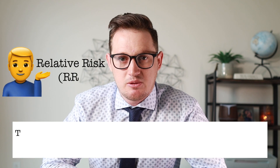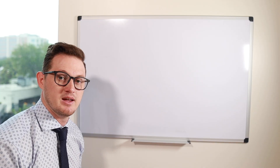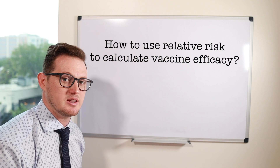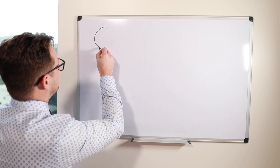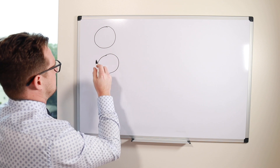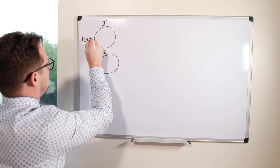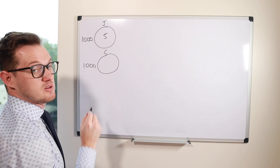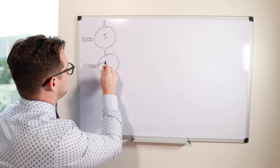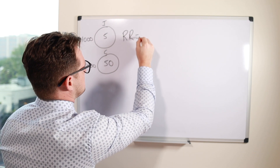Vaccine efficacy is calculated using something called relative risk, which is the proportion of people in the vaccinated group that get the infection compared to the unvaccinated group. To demonstrate this, we create two groups: one vaccinated group and one control group, each with a thousand people. Let's imagine in the vaccinated group there are five people that get the infection, whereas in the control group there are 50 people that get the infection. We can then use these numbers to calculate relative risk.